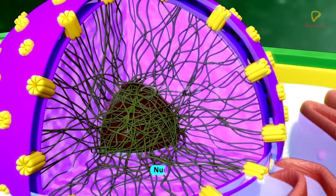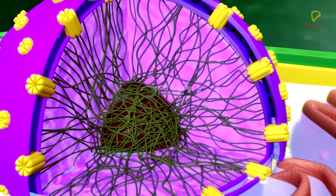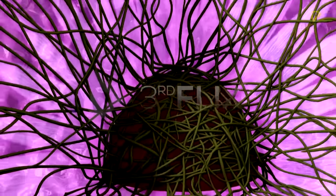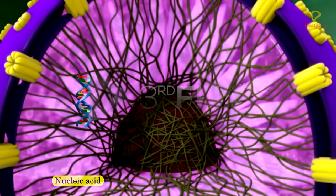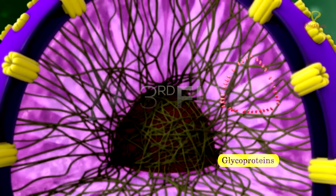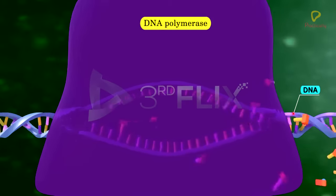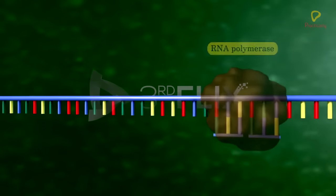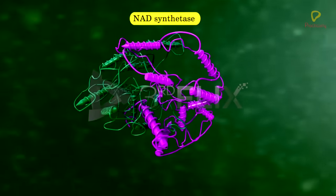Nucleoplasm is also called nuclear sap or karyolymph. Nucleoplasm is mainly composed of nucleic acids, ribonucleoproteins, glycoproteins, DNA polymerase, RNA polymerase and NAD synthetase.